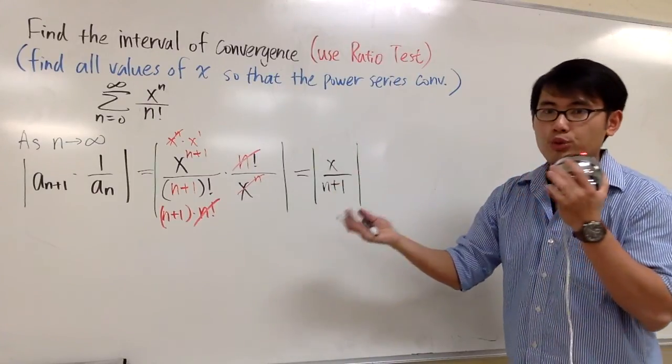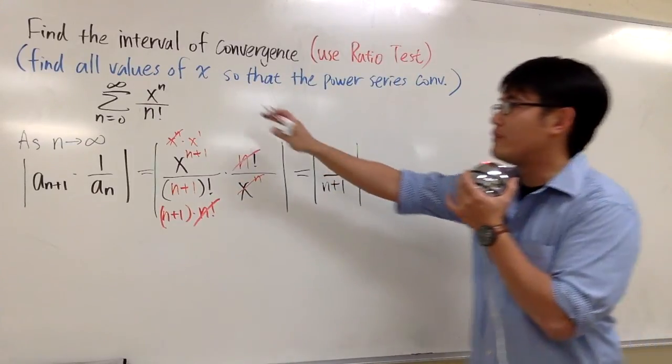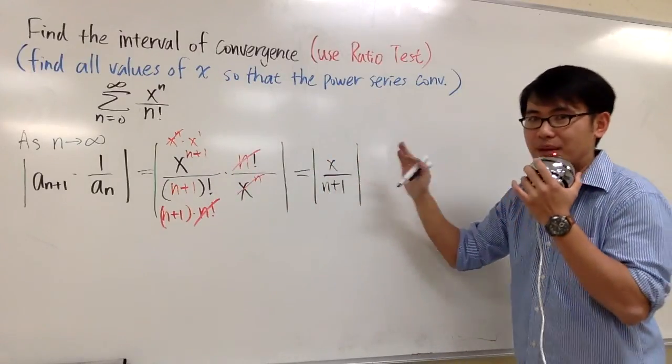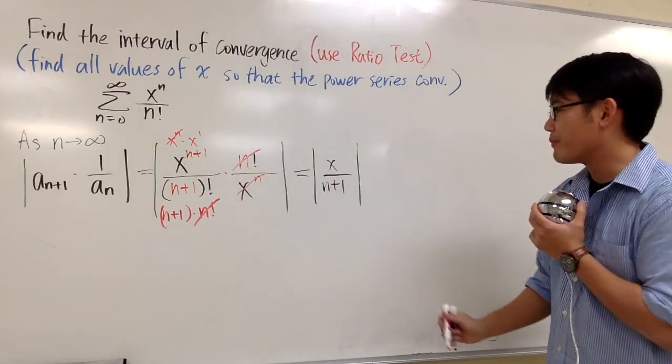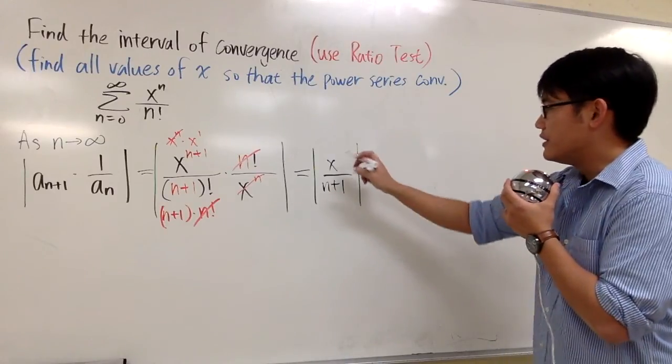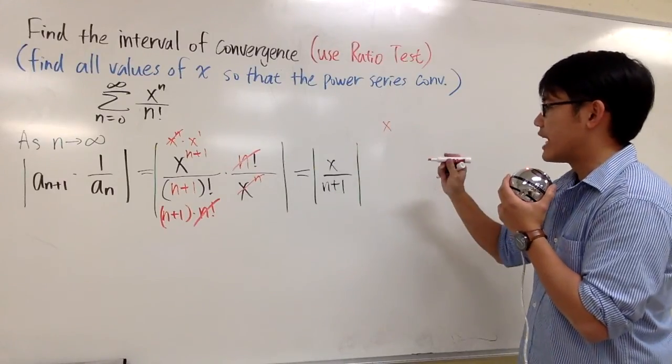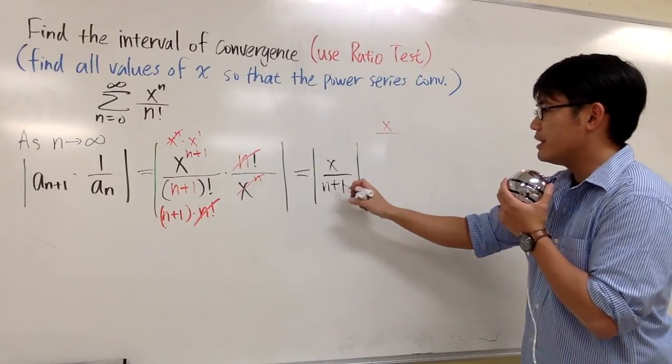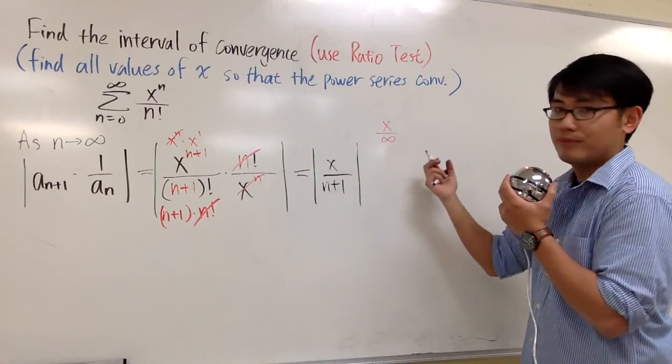x is supposed to be just any real number that we're trying to find out for what value of x. So x is just like a number, you know, a real number. But then n is approaching infinity. So if you think about when we have an x on the top over infinity plus 1, which is still infinity, this is what happens, right?